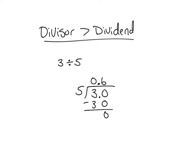Whenever our divisor is greater than our dividend, our answer is going to be less than one. It's going to be a fraction or a decimal. So don't be scared of problems where the dividend is less than the divisor. It just means that our answer is going to be less than one.